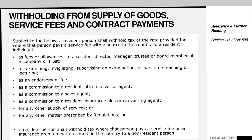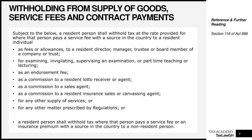Now let's talk about withholding from the supply of goods, service fees, and other contract payments. Where a resident person makes payments for the following, they are required to withhold tax as long as the service fee has a source in Ghana. This includes fees or allowances to a resident director, manager, trustee, or board member — generally at 20%. It also includes service fees to an examiner, invigilator, supervisor, or anyone doing part-time teaching or lecturing — at 10%.